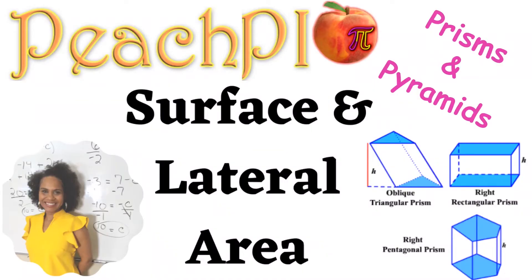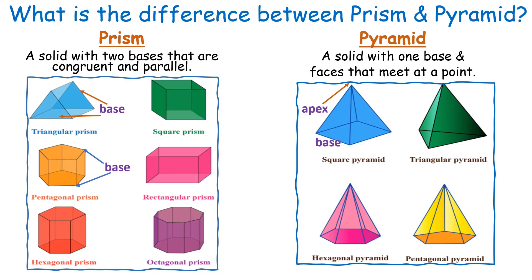In this lesson we're looking at the surface and lateral area of prisms and pyramids. A prism is a solid with two bases that are parallel. For example, a triangular prism has two triangular bases where opposite sides are congruent and parallel. A pyramid is a solid with only one base and faces that meet at a point called the apex. So the key difference is: a prism has two bases and a pyramid has only one base.